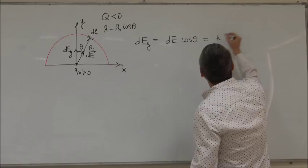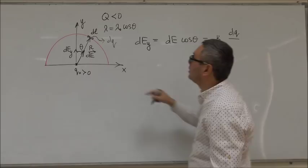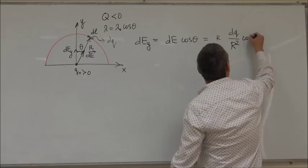What about DE itself? Well, DE is equal to K times the amount of charge within this element. Let's say it's DQ. DQ over this distance squared.